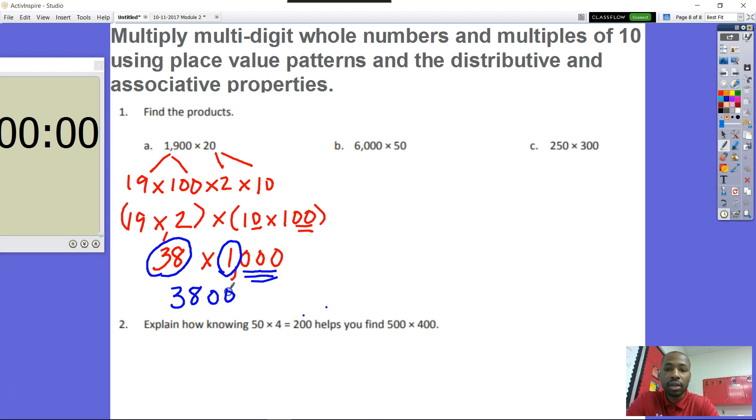I know that 38 times 1 is going to be 38,000. So what I did was I took that 38 and that 1, and I multiplied. 38 times 1 is 38, and then I counted my zeros. 1, 2, 3 zeros. 1, 2, 3. That's my answer.